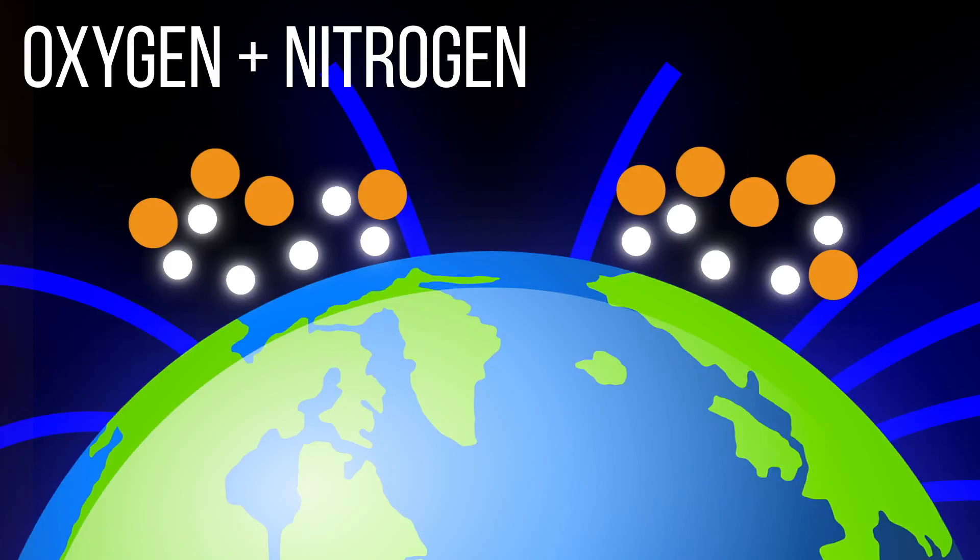Oxygen gives off the green and yellow colors we see, while nitrogen gives off red, violet, and sometimes blue colors in the sky.